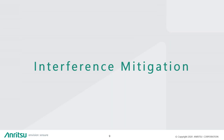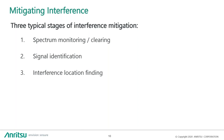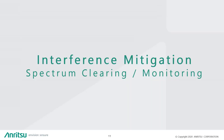Now we're going to go into all the different steps of interference mitigation. I've broken these steps into three general categories: first, spectrum monitoring and clearing; second, signal identification; and finally, interference location finding. Once we know there's interference and have learned some things about it, we can start to pinpoint where that interference is — which is the last step in removing it.